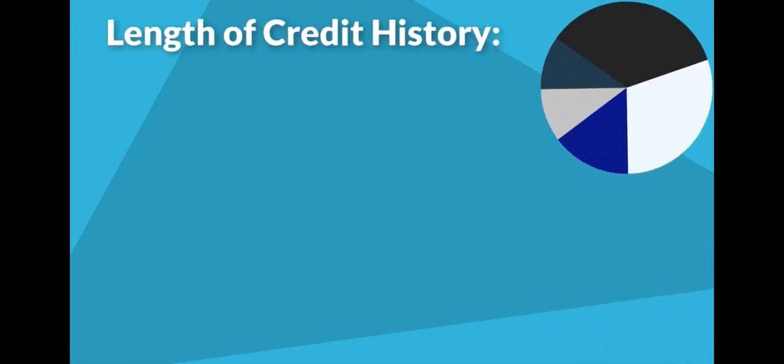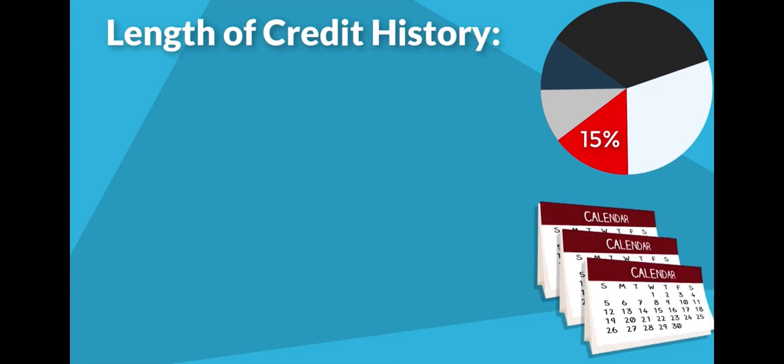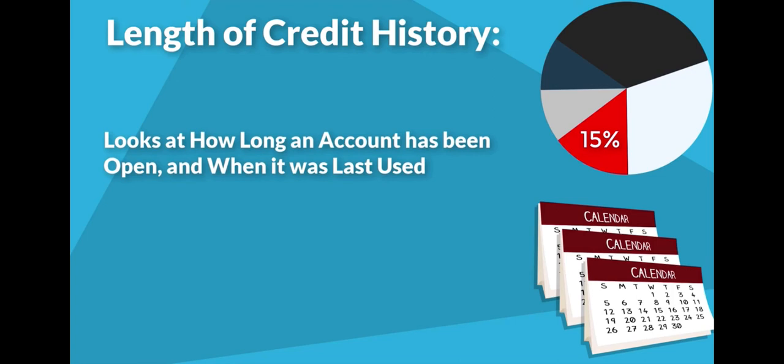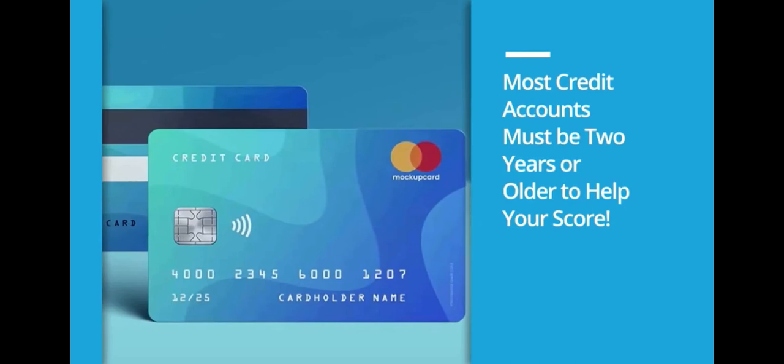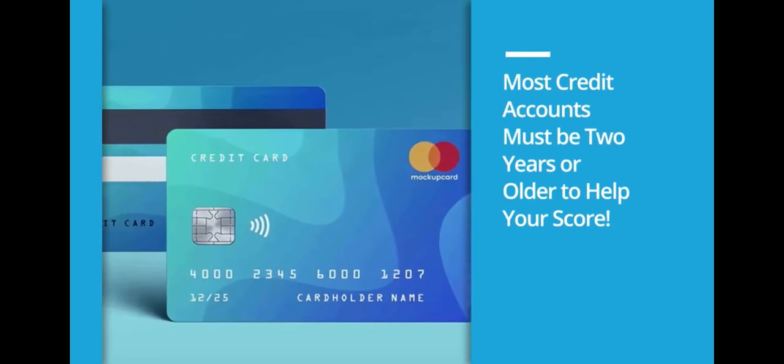The next credit score factor, length of credit history, makes up 15% of your credit score. This category looks at how long your accounts have been open and the length of time since the last activity on the account. The longer an account is open, the more it improves your credit history, which is why it is generally advisable not to close old accounts. The difficult part about this factor is that it takes time and most credit accounts that can help you must be 2 years old or older.